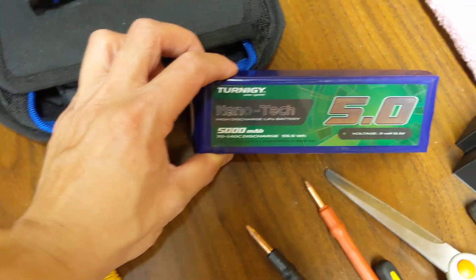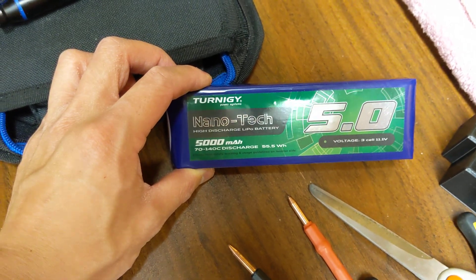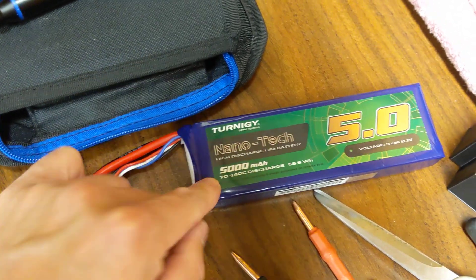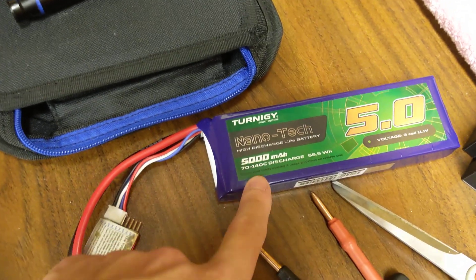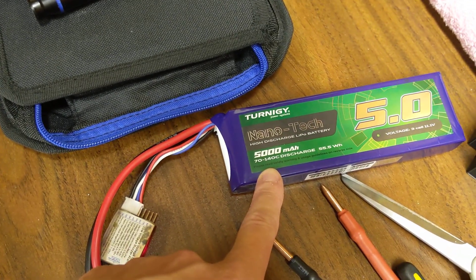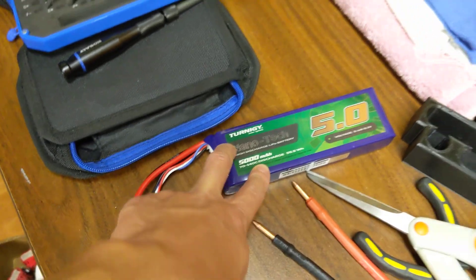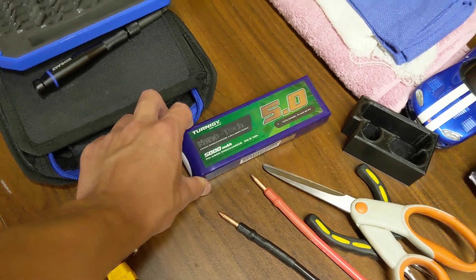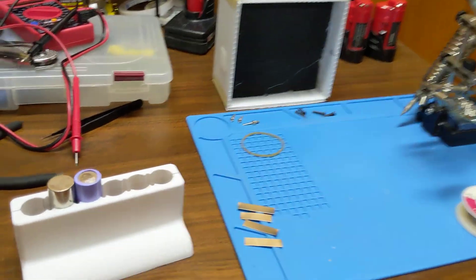I bought a Turnigy 5000mAh battery for it. This is a 70-140C peak discharge. The usual recommended one I see is a 65-130C. This one was actually much cheaper than the recommended Turnigy one and it's rated at a higher discharge rate, which is good. I've been using this for a couple different projects.